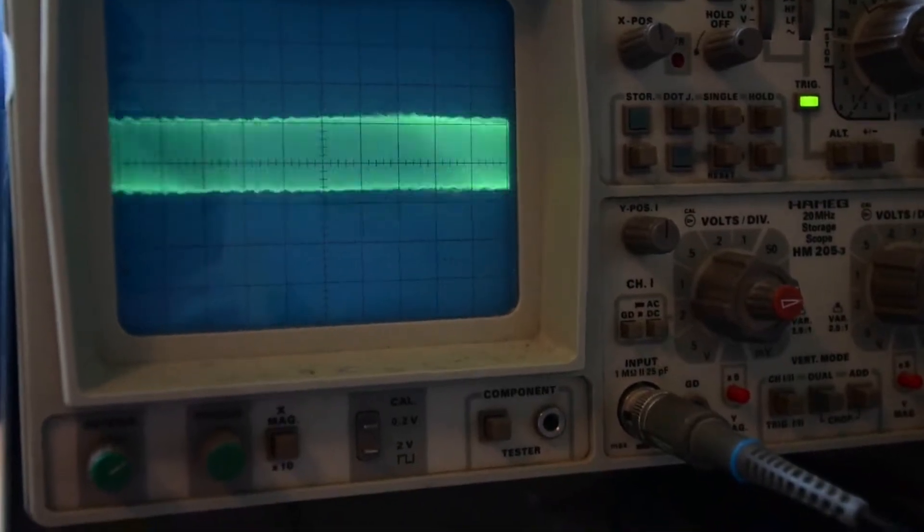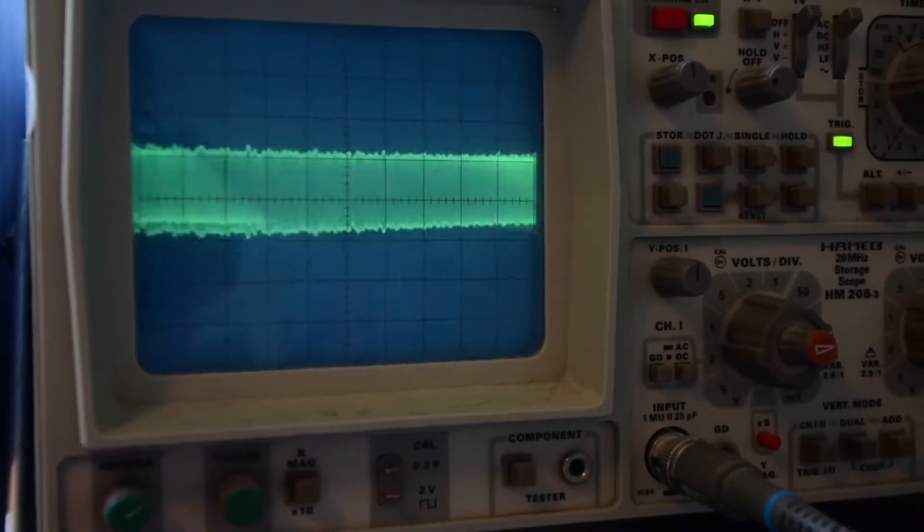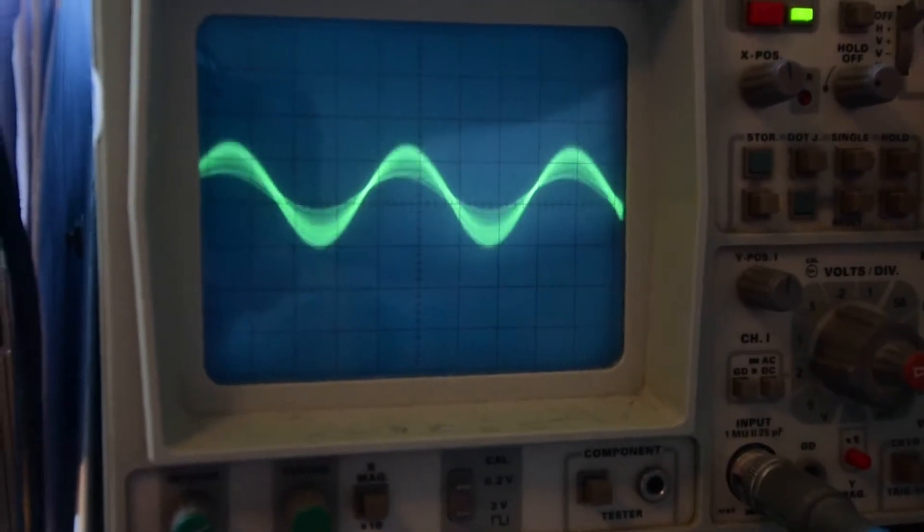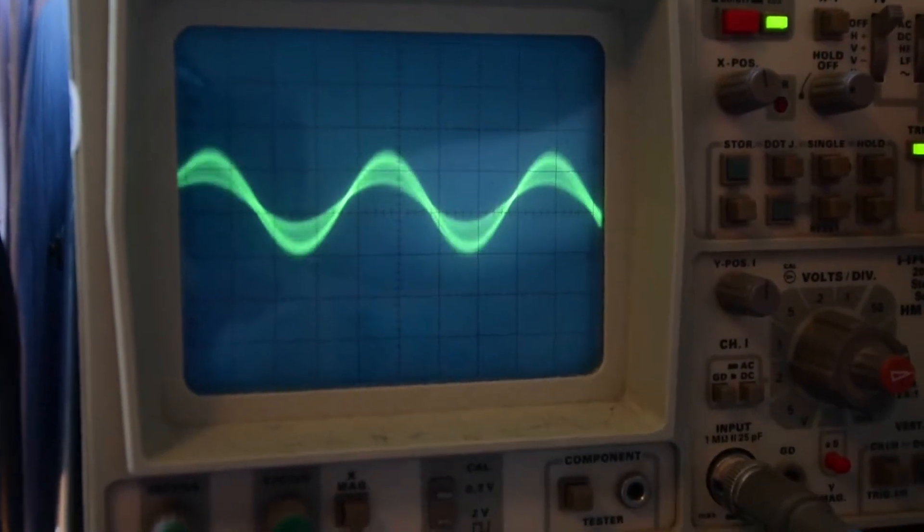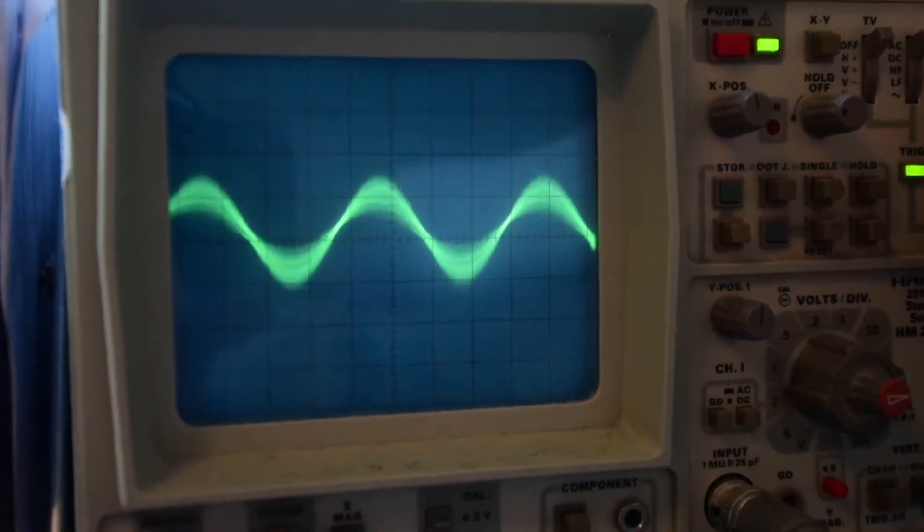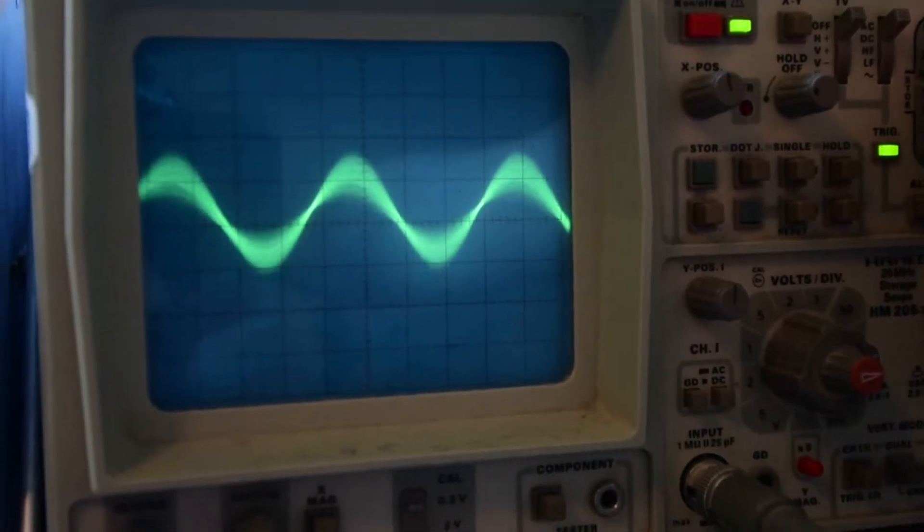So here we have the raw AM signal being picked up by our capacitor and coil, which is called a tank circuit. If I zoom right in to the waveform, you can see the individual signal, which in this case is Absolute Radio, so it's 1215 kHz.